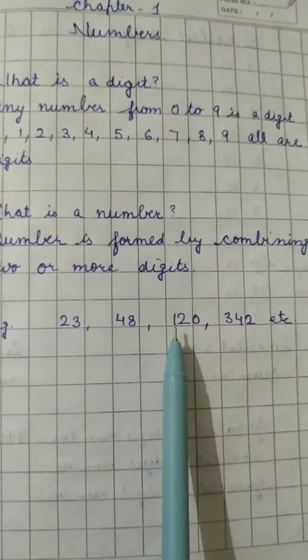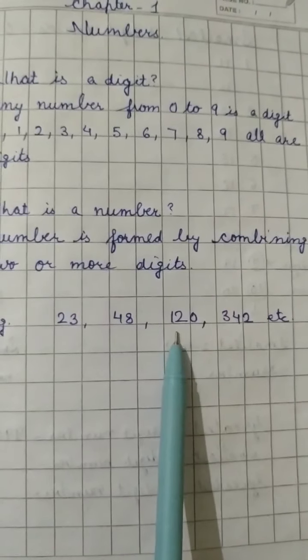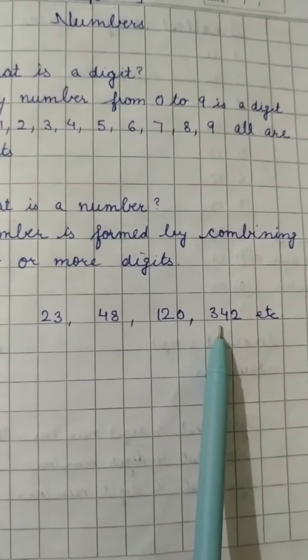Then in the next one I have taken three digits 1, 2 and 0. It is 120 the three digit number. Then 3, 4, 2 is a three digit number.